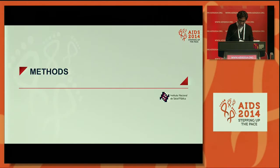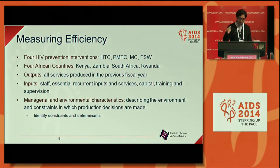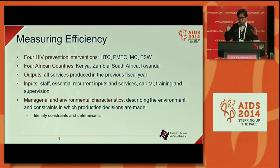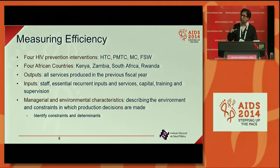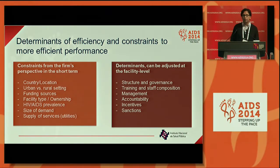I will go quickly through some aspects of the methods — we have a poster describing them in more detail and can share it if interested. We measured efficiency for four prevention interventions in four African countries. We measured all outputs for these interventions produced in the previous fiscal year on a monthly basis, and also all inputs involved in producing those services — all at the facility level, month by month. We also captured all the characteristics described before: constraints and determinants, at the facility level.